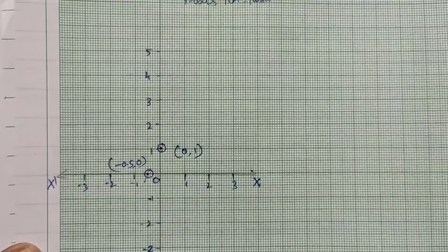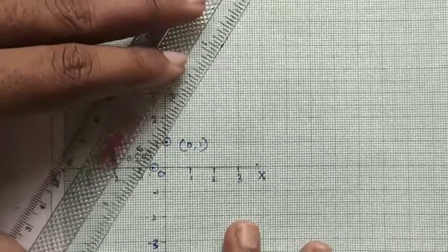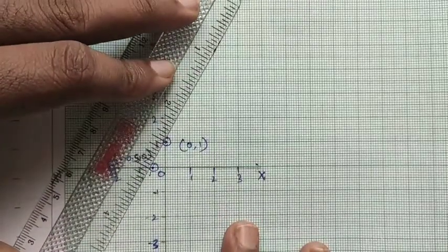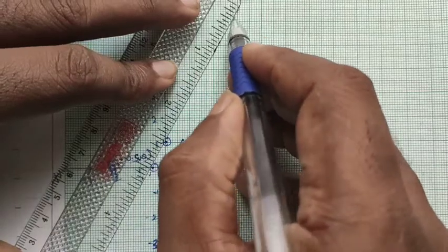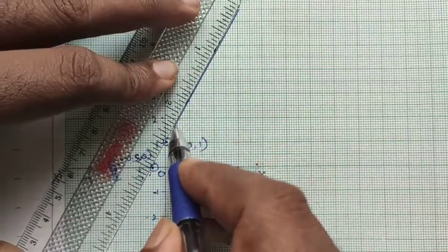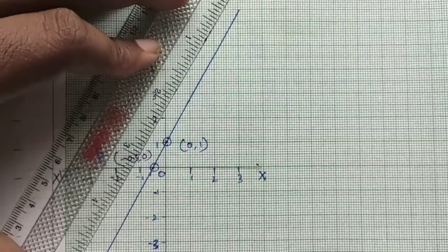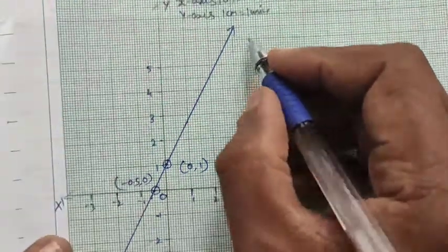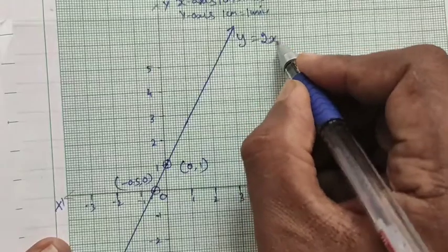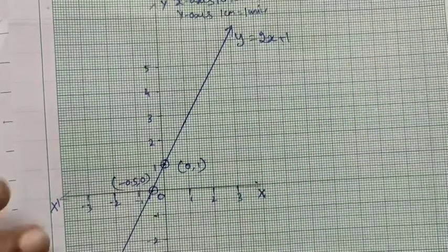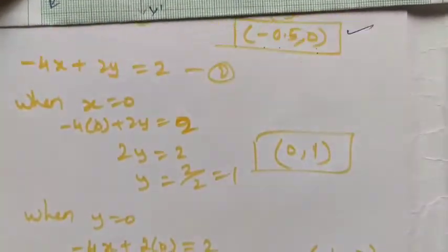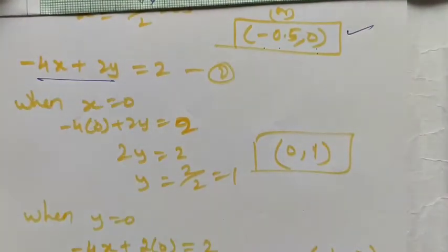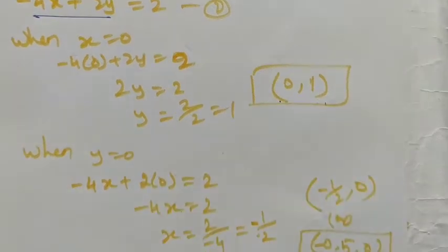The point lies on the x-axis at minus 0.5. Now we draw the line through these two points for equation 1 — we can extend it as needed. This is the line of equation y equals 2x plus 1. For equation 2, minus 4x plus 2y equals 2, we have the same points: (0, 1) and (minus 0.5, 0).